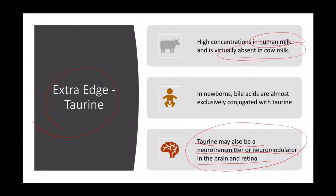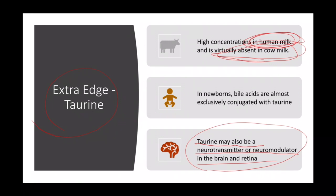Taurine is present in high concentration in human milk and is virtually absent in cow milk. The practical implication is that newborns exclusively use taurine for the conjugation of bile salts, not glycine. So newborns require taurine, which is present in human milk.